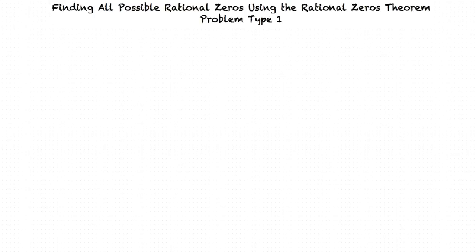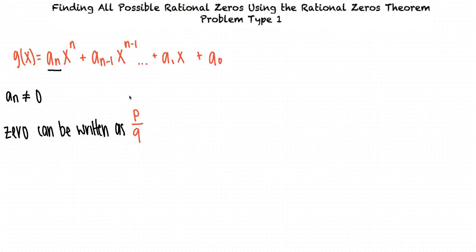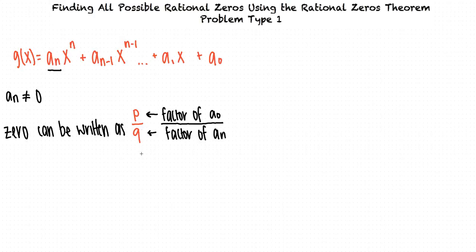The Rational Zeros Theorem can be stated as follows: Let g of x be a polynomial with integer coefficients and a sub n not equal to 0. If g of x has a rational zero, then the zero can be written as p divided by q, where p is a factor of a sub 0 and q is a factor of a sub n. In other words, the only possibilities for rational zeros of g of x are numbers of the form p divided by q, where p is a factor of the constant term and q is a factor of the leading coefficient.